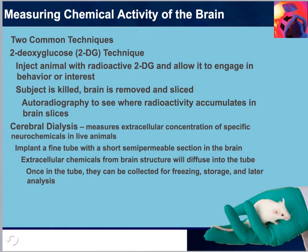Two common techniques to measure chemical activity in the brain are the 2-DG technique, as described when we discussed the PET scan. This is one molecule that is able to trick the blood-brain barrier because it mimics glucose, which is a large molecule that the brain does use. The animal is injected with radioactive 2-DG and allowed to engage in a behavior of interest. Eventually the subject is killed, the brain is removed and sliced, and through autoradiography we are able to see where the activity was accumulated in the brain slices.